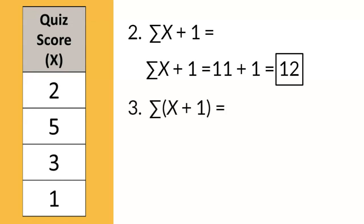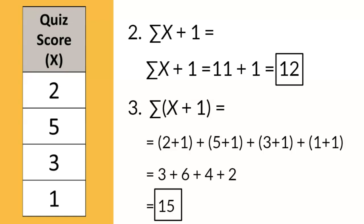Now, question 3 is asking something completely different than question 2. The order of operations reminds us that we have to do whatever is in the parentheses first before we can do the summation of the Greek letter sigma. In other words, we have to add 1 to each X score first. So we get 2 plus 1 and 5 plus 1 and 3 plus 1 and 1 plus 1, so that then the final answer is 15. A quick review of question 2 and question 3 illustrate that we get 2 very different answers.